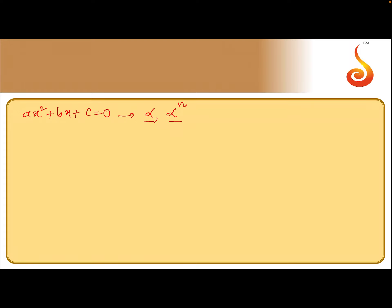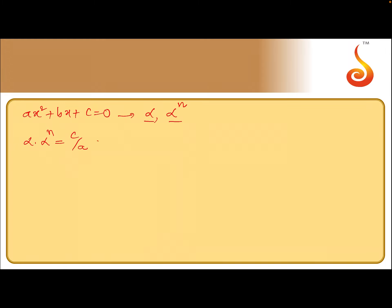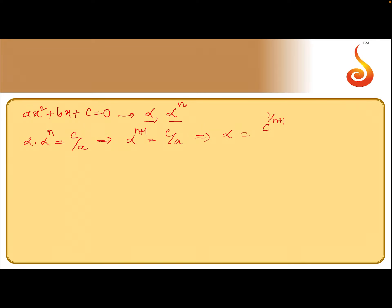The product of the roots is α · α^n = c/a, which can be written as α^(n+1) = c/a. Therefore, α can be written as c^(1/(n+1)) divided by a^(1/(n+1)), taking the whole expression to the power of 1/(n+1).